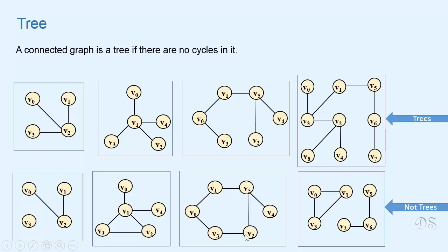This graph also has this cycle. This graph has this cycle and it is also not connected. So these all are not trees.